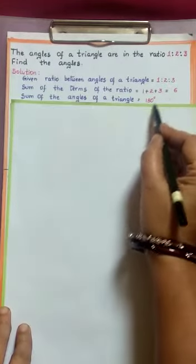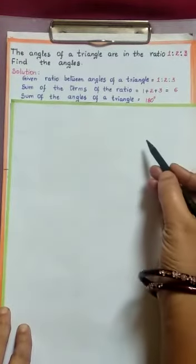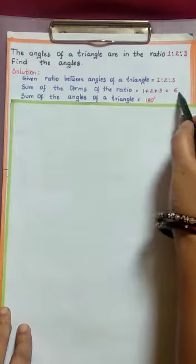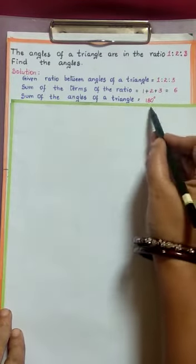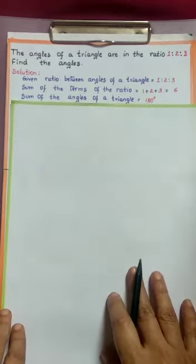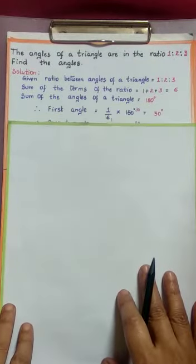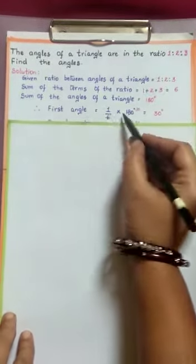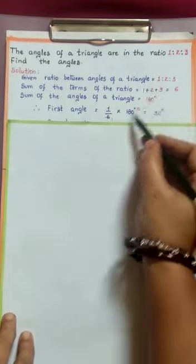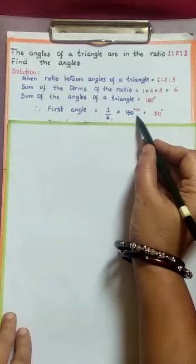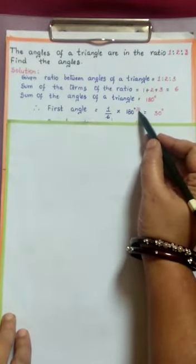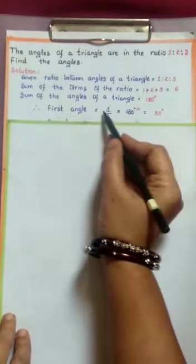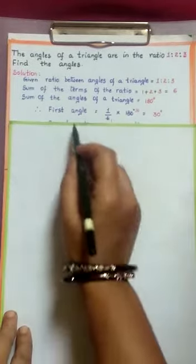1/6 of 180 degrees gives the first angle, 2/6 of 180 degrees gives the second angle, and 3/6 of 180 degrees gives the third angle. For the first angle: 1 by 6 into 180 degrees. 6 goes into 180 thirty times, so 1 times 30 is 30 degrees. This is your first angle.